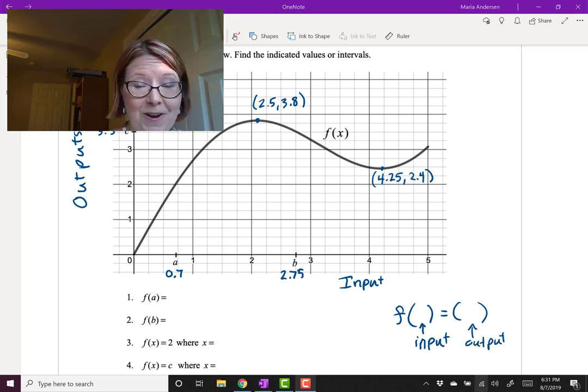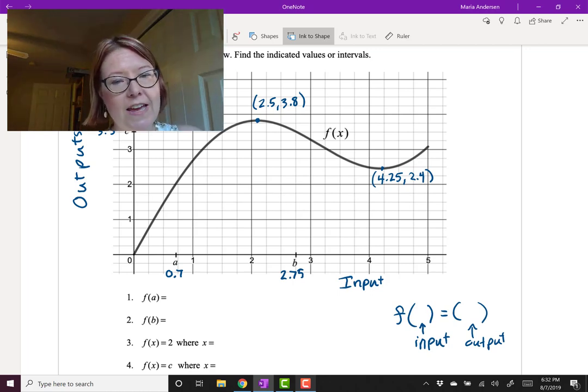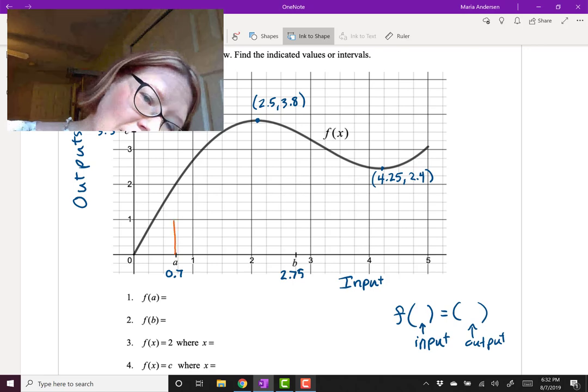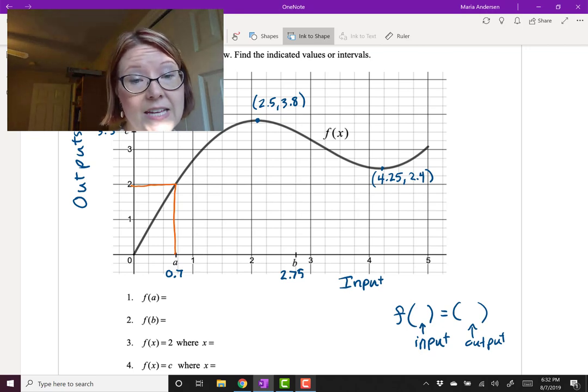So when we're asked to find f of a, we're saying when the input is a, what's the output of the graph f? In order to find f of a, I'm going to use a as the input, go up to the graph and then go over to the vertical axis to see what the output is. Let me draw that on the screen. Starting at a, I'm going to draw a vertical line up to the graph and then over to the y-axis. And you'll see in this case, the value is 2. So f of a is 2.